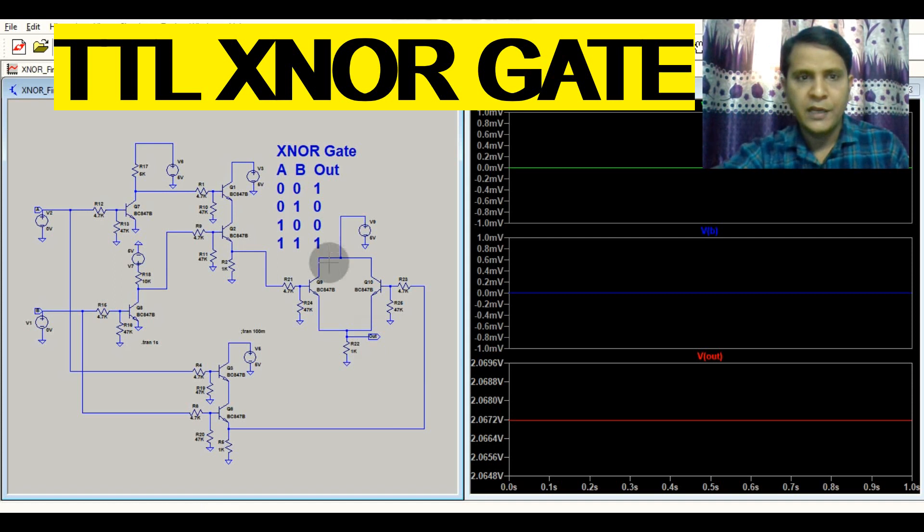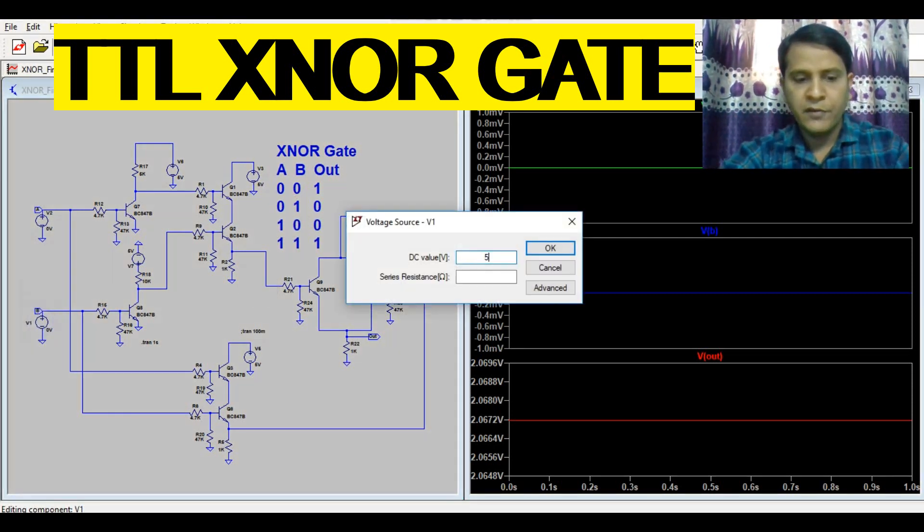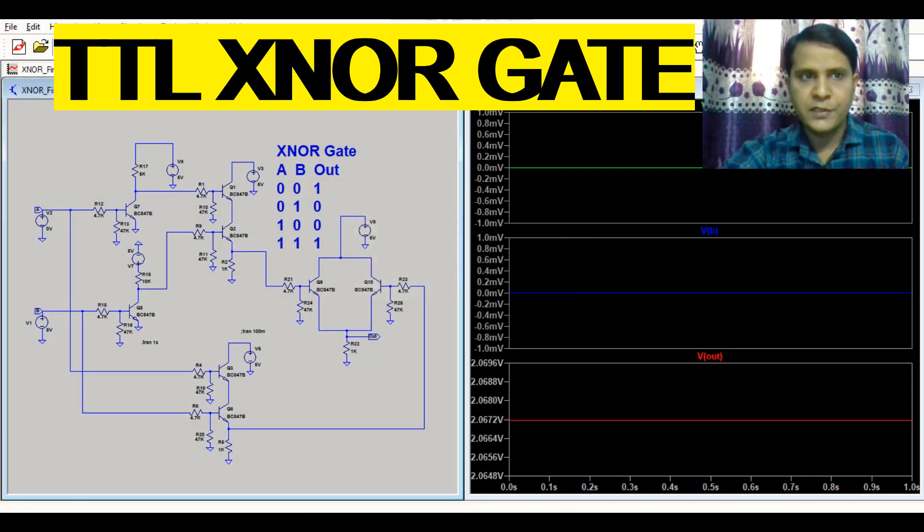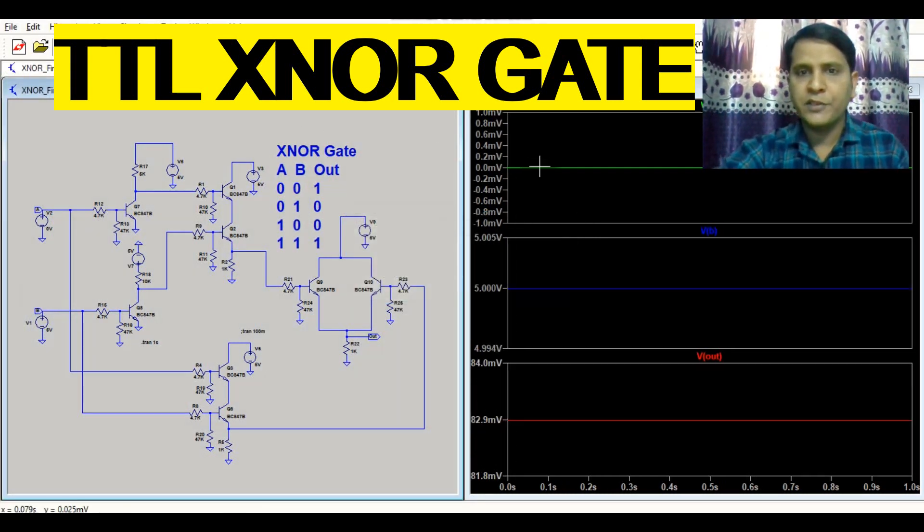Let us now see the second case: V equals 0 volt, V equals 5 volt. So if V equals 0 volt, V equals 5 volt, your V out equals 0 volt.